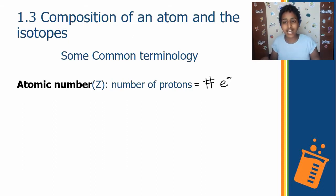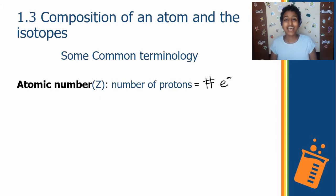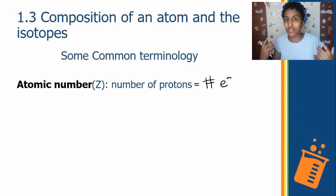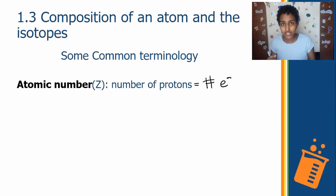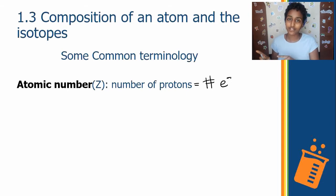Think of stability as the electrons being calm and not having moved anywhere, because electrons like to move from place to place. If the electrons are where they should be, the atom is stable, and the atomic number equals the number of protons, which also equals the number of electrons. We say the atomic number is the number of protons because the proton count never changes, while the electron count may change.